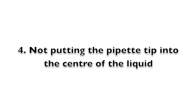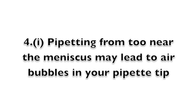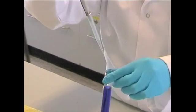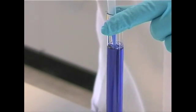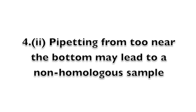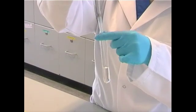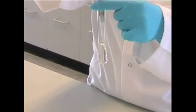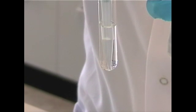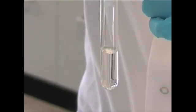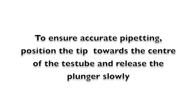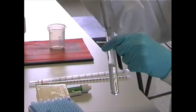Not putting the pipette tip into the centre of the liquid may result in errors in pipetting. Specifically, pipetting from too near the meniscus may lead to air bubbles in your pipette tip, as shown here. While pipetting from too near the bottom of your test tube may lead to a non-homogenous sample. To ensure accurate pipetting, position the tip towards the centre of the test tube and release the plunger slowly.